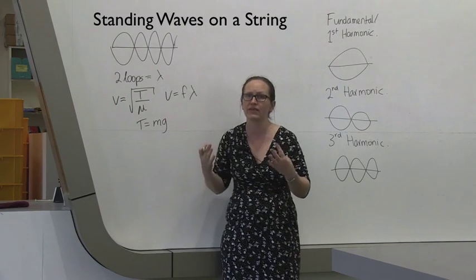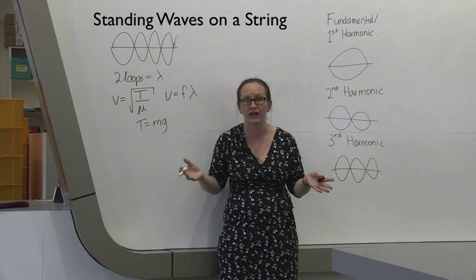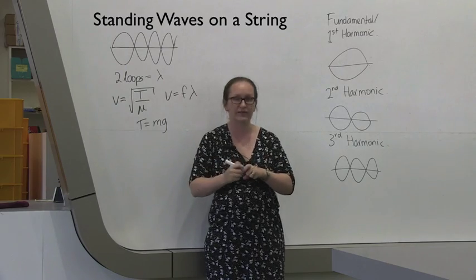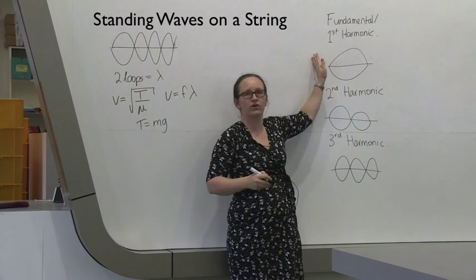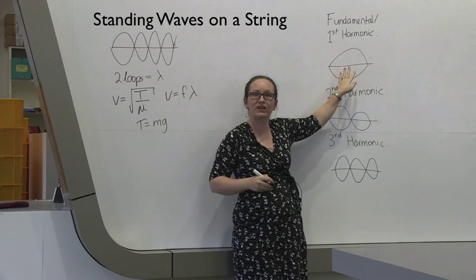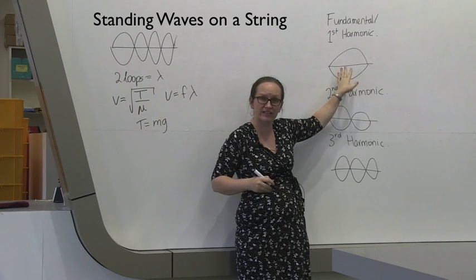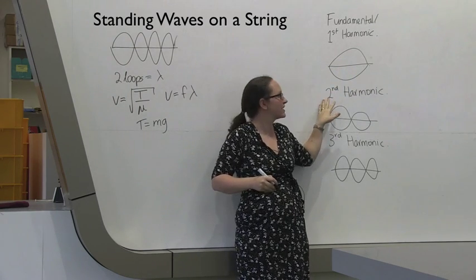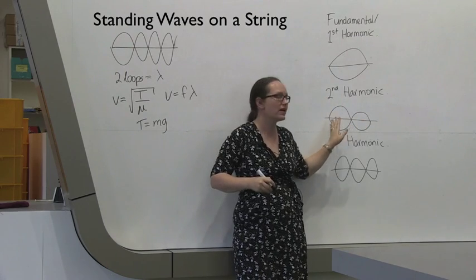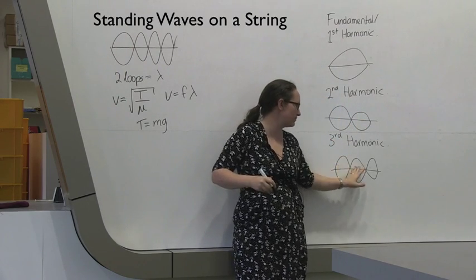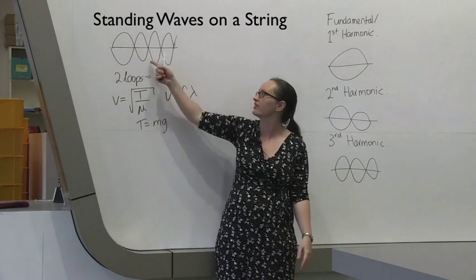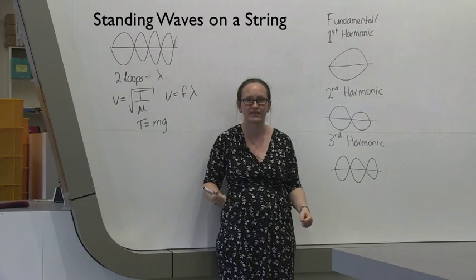Some other words that you need to be aware of in order to complete this experiment: fundamental or first harmonic is when you have just one loop generated. The second harmonic is when we have two loops and the third harmonic is when we have three loops. For a fourth harmonic, you'd have four loops like this.